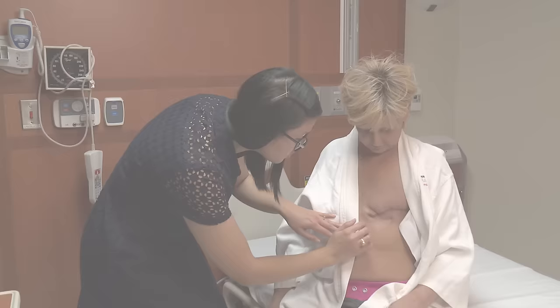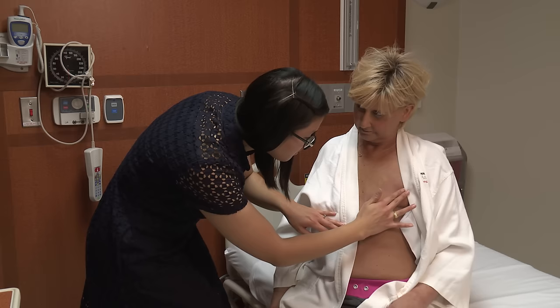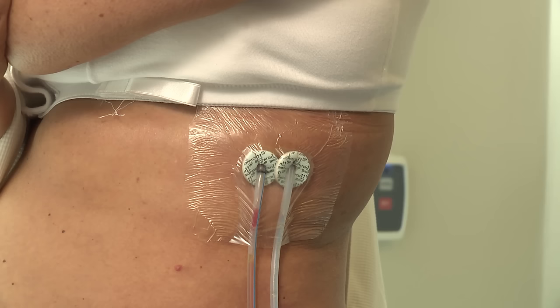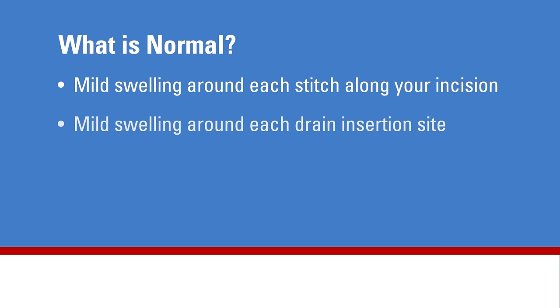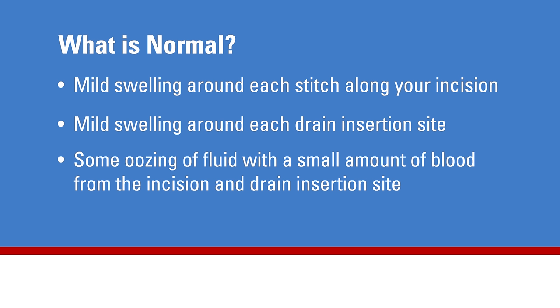Your incision may be closed with stitches that dissolve on their own or stitches that need to be removed by your surgeon at a later time. You may also have a dressing over your drain insertion site. There are many types of dressings, and the type on your incision may differ from what is shown in this video. You will receive separate written instructions on how to care for your incision. It is normal to have mild swelling around each stitch and each drain insertion site, and some oozing of clear yellowish fluid with a small amount of blood.